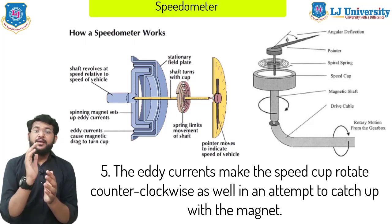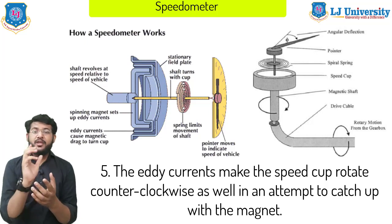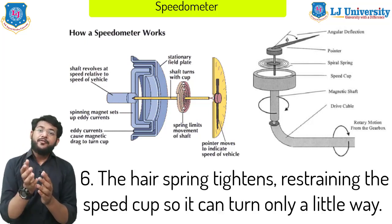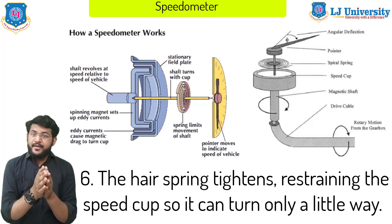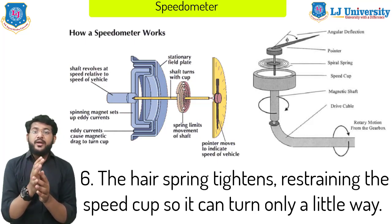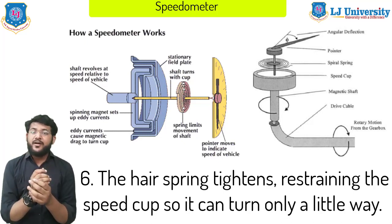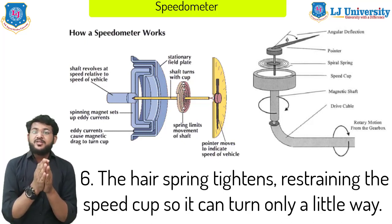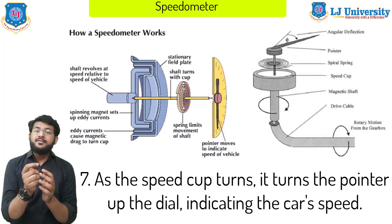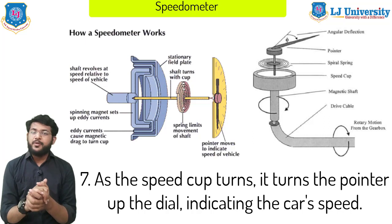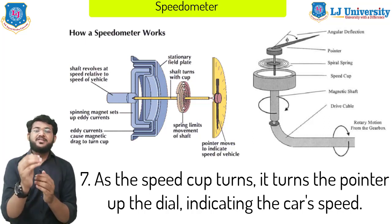Fifth, these eddy currents make the speed cup rotate, attempting to catch up with the magnet. Note that the magnet and the speed cup are not joined together — there is an air gap between them so they move freely. Sixth, the hair spring tightens, restraining the speed cup so it can turn only a limited amount. Seventh, as the speed cup turns it turns the pointer dial, which indicates the speed on the speedometer.